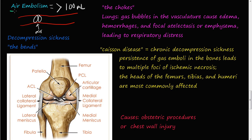In this video we are going to discuss what air embolism is. In order to get an air embolism, you need more than 100 milliliters of air inside your circulatory system to form these air emboli.